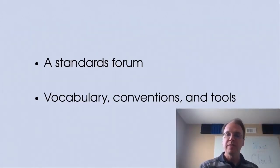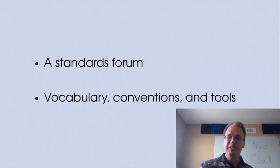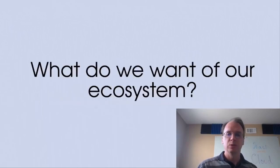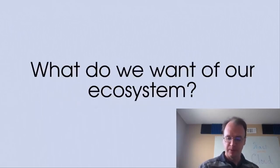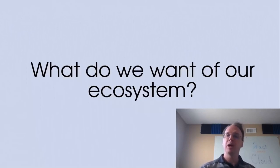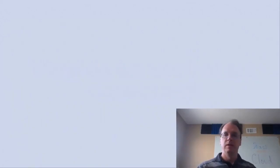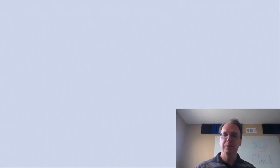Right now, the API ecosystem is just getting started. This is a really great time to ask a really fundamental question: what do we want of our ecosystem? What do we want this ecosystem that we're all going to share to look like? A natural way to answer those questions is to look at Wasm itself and say, what are the things we really like about Wasm? Can we have those things in the APIs as well?